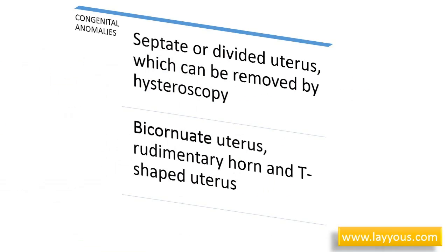Congenital anomalies — most of them precipitate abortions, but some affect fertility and can be corrected surgically, such as a septate or divided uterus, which can be removed by hysteroscopy. Anomalies such as bicornuate uterus, rudimentary horn, and T-shaped uterus are usually associated with unilateral or bilateral fallopian tube anomalies, increasing the risk for ectopic pregnancy and recurrent pregnancy loss in addition to infertility.